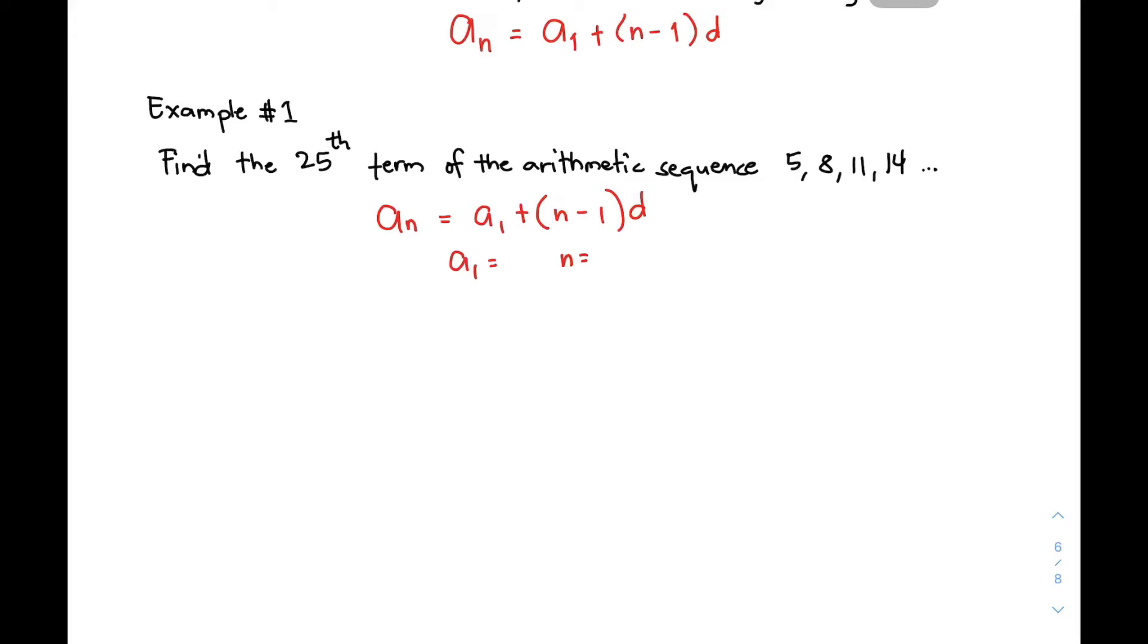Your n is the number of terms na haanapin mo. And then, your d is your common difference. Since our sequence is 5, 8, 11, and 14, automatically, this will be your a₁. So let's have here a₁ = 5. And then, to identify the value of n, look at the specified or the term na hinahanap natin. Since this is 25th, you will be putting here n = 25.